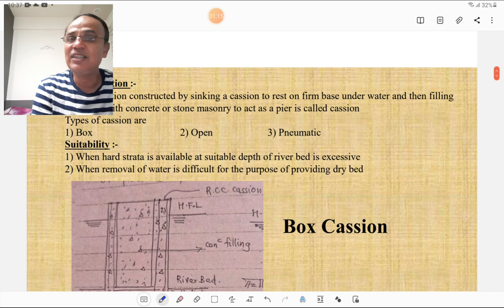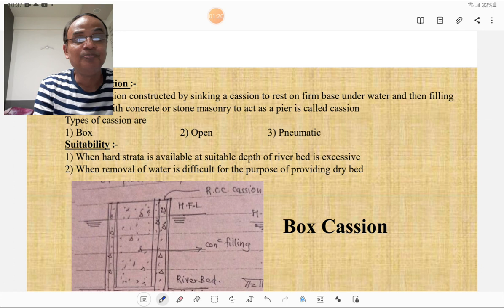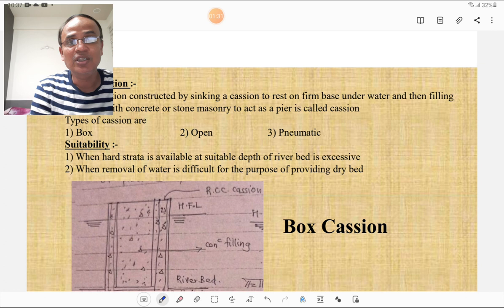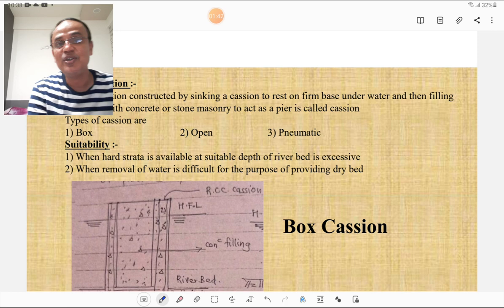What is the suitability of caisson foundation? When hard strata is available at the suitable depth of river bed is excessive, when the depth of river bed is excessive for the hard strata, in such a situation these caissons are useful. And when the removal of water is difficult for the purpose of providing a dry bed, in such a situation these caissons are useful.